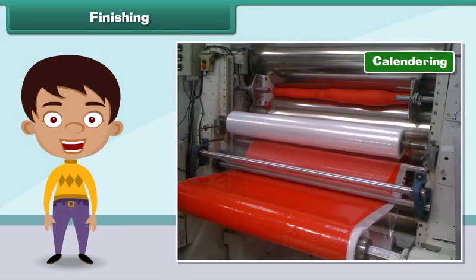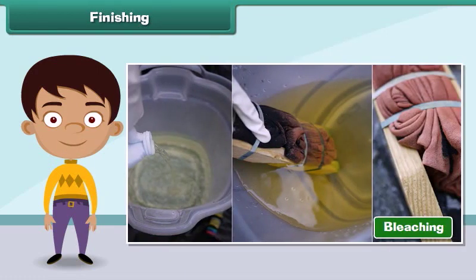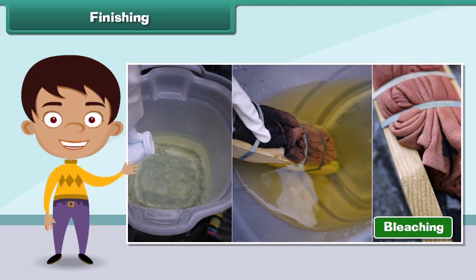Calendaring is the process that improves the smoothness and shine of a fabric. Bleaching is the process of removing the natural color of raw fabric.